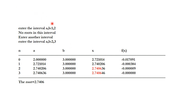This is the output for the above Python code. Initially, a = 1 and b = 2 returned 'no roots in this interval.' Entering another interval with a = 2 and b = 3, we get the iteration table and the final root is printed.